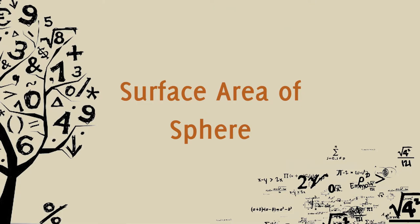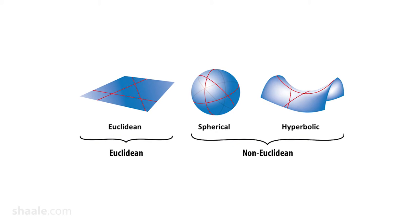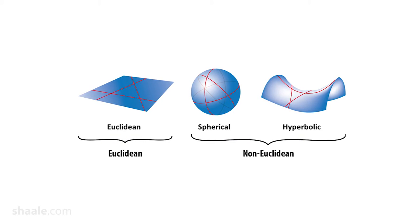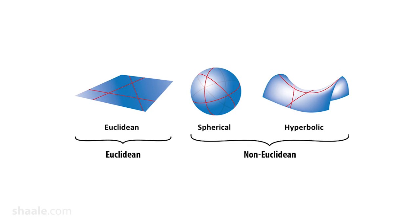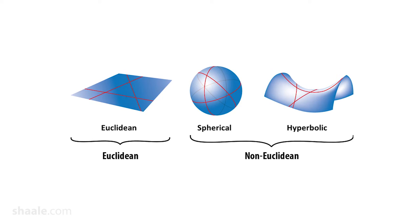He goes to present the surface area of a sphere. The surface of a sphere is not an Euclidean surface — it is not a flat surface. So you move from Euclidean to a non-Euclidean surface. Computing the area of a non-Euclidean surface is not a trivial thing.